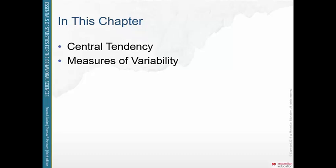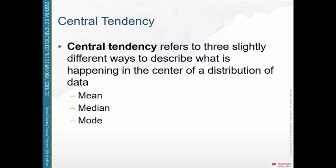In this chapter, we'll cover central tendency and measures of variability. This PowerPoint will be on central tendency, which refers to three ways to describe what's happening in the center of a distribution of data. We're talking about a way that we can describe the average data point, the most typical data point. And there are three ways we can look at the average: the mean, the median, and the mode.